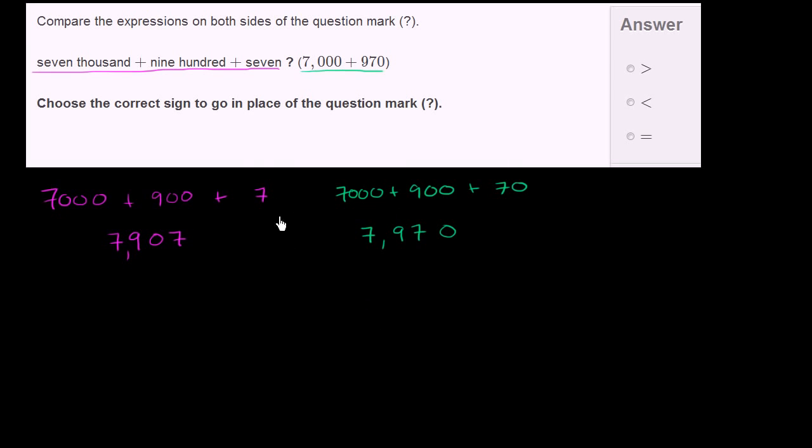So if we compare place value by place value, we have 7,000 in either case. So the thousands place is the same. We have the same number of hundreds. We have 900s. But here we have no tens, and we have a 7. And here we have no ones, and we have 70.